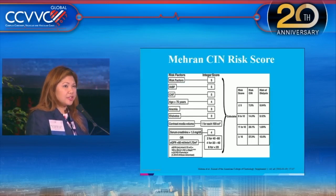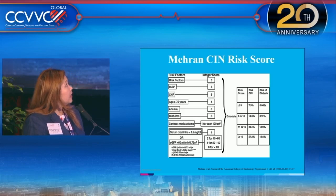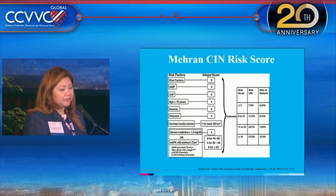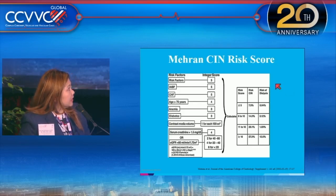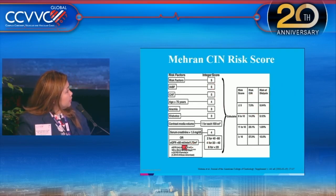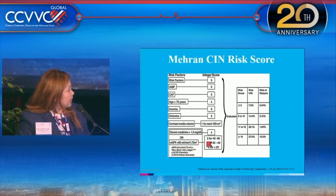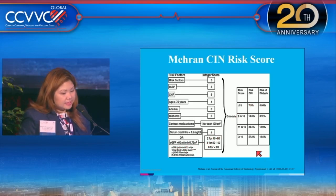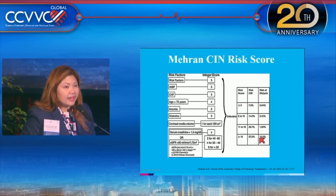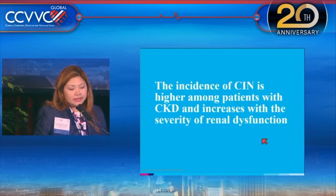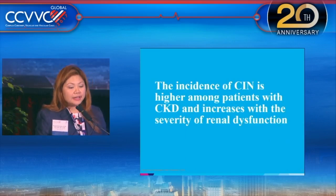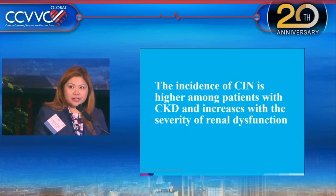Dr. Moran's risk score is a way of knowing which patient is at risk for contrast-induced nephropathy. Every risk factor has an integer value, and the higher the total, the greater the risk of CIN and the risk for dialysis. For example, a reduced estimated glomerular filtration rate gives a higher integer. The incidence of CIN is higher among patients with chronic kidney disease and increases with the severity of renal dysfunction.